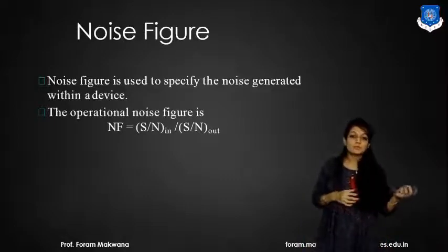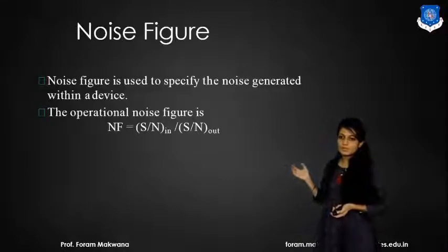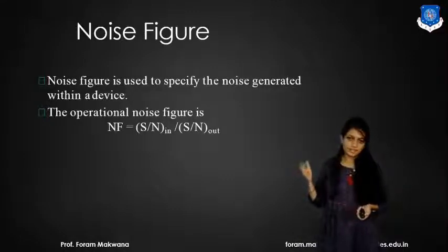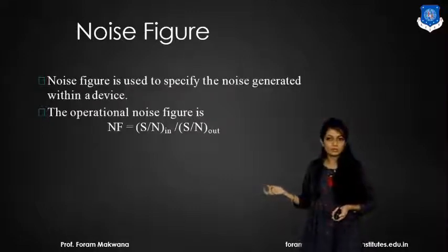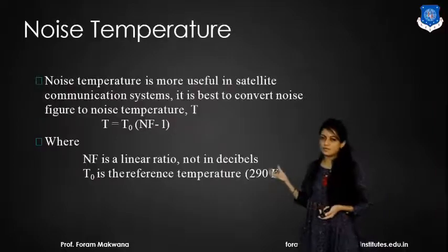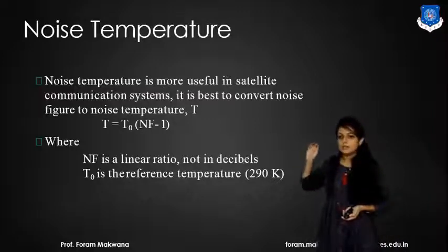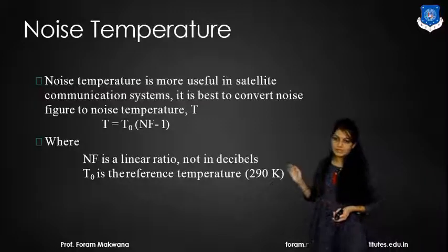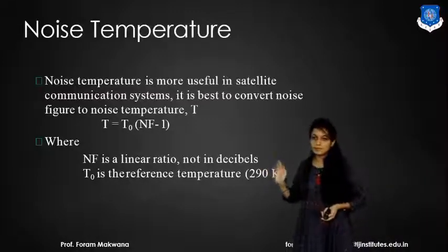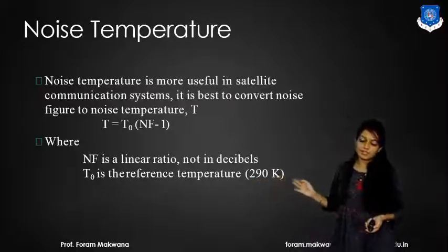The next topic is noise figure, which is used to specify the noise behaviour within a device. It is defined as the ratio of signal-to-noise ratio at the input to the signal-to-noise ratio at the output — this is the operational noise figure. The noise temperature is related to the noise figure by: Te = T0·(F − 1), where F is the noise figure as a linear ratio of the receiver and T0 is the reference temperature of 290 Kelvin.